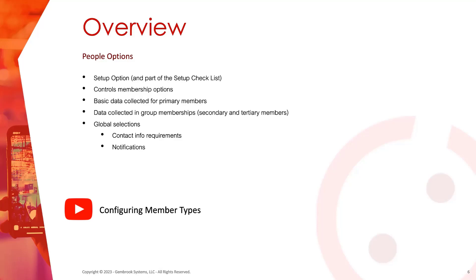Your people options control your membership options — the data you're collecting from all of your members: primary members, secondary and tertiary members, group memberships, and business memberships. It controls basic fields, what you're able to see, and what your members can do as far as managing themselves. This also controls your global selections for contact information requirements and notifications sent to officers and chapter administrators. This pairs with last week's webinar on configuring member types.